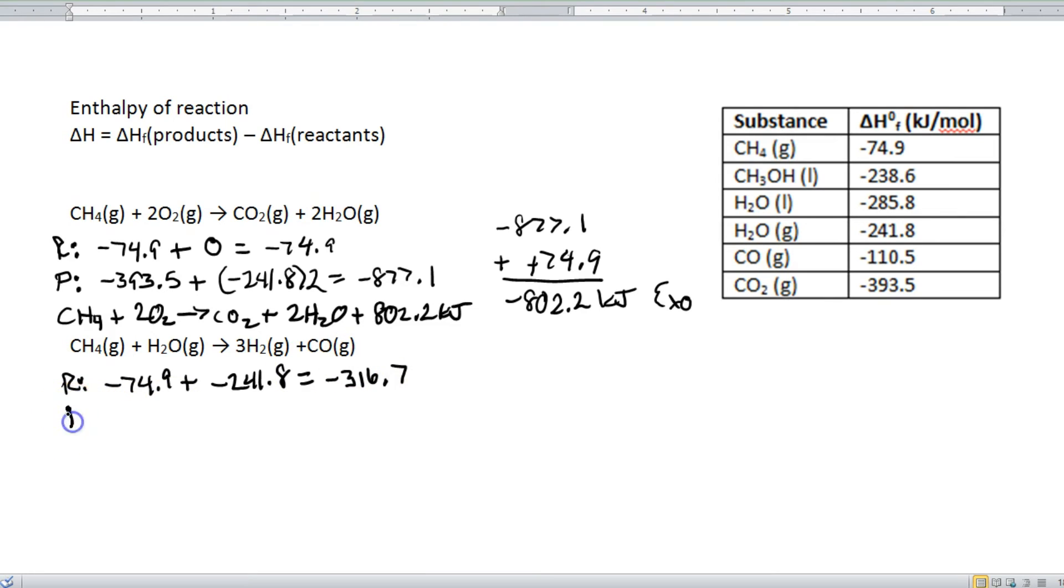Step two, add up your products. Like so. Alright, so we got 3H2. Well, H2 is actually not here in the chart, which means that it is zero.